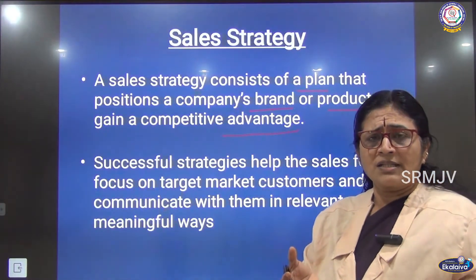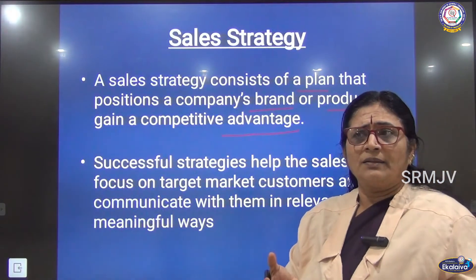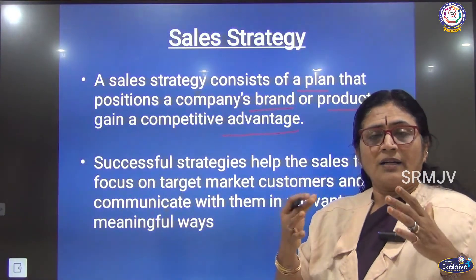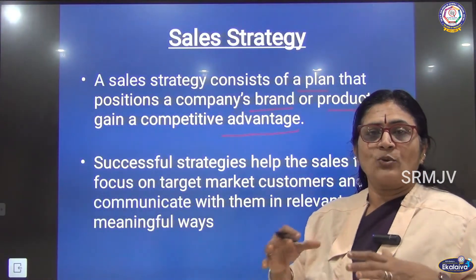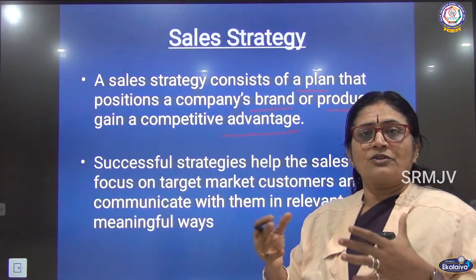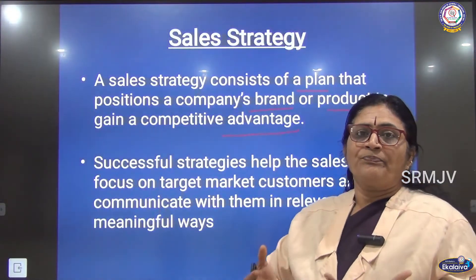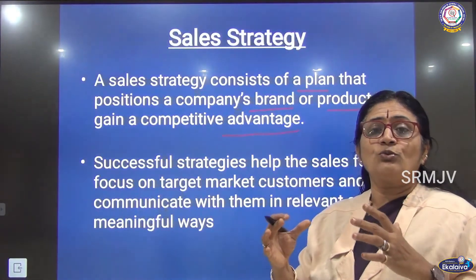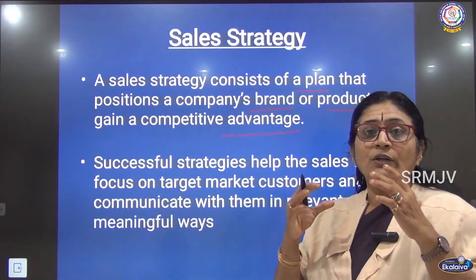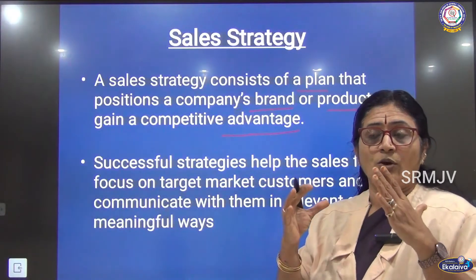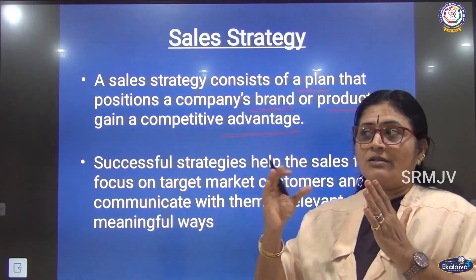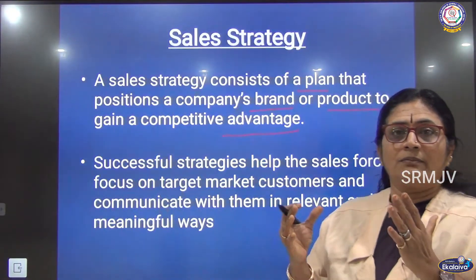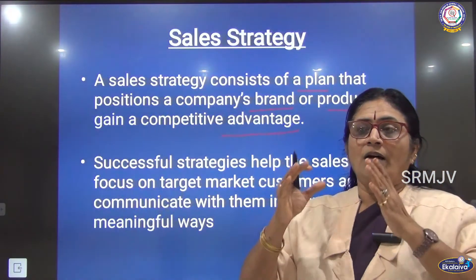Big companies like Procter & Gamble, Hindustan Lever, and Nestlé have marketing heads, sales heads, sales area managers, and sales representatives. They are trained very well and educated on the sales plan. For example, with TVS 50, this is how we are going to sell the product; this is your long-term goal.